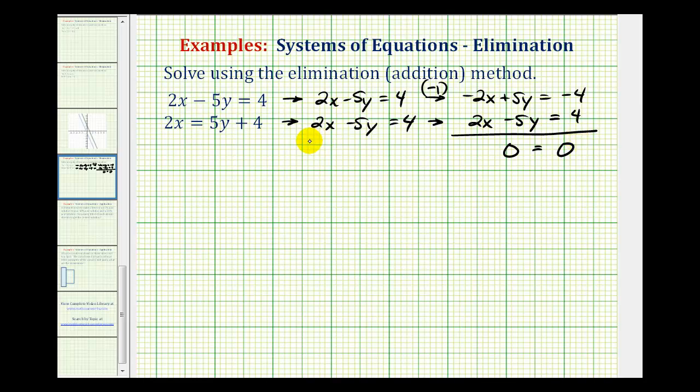So when solving a system of equations algebraically, meaning by the elimination method or substitution method, if the variables simplify out, if the remaining equation is true, we have an infinite number of solutions. And if it's false, we have no solution.